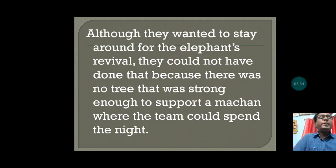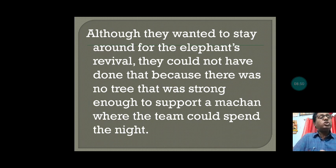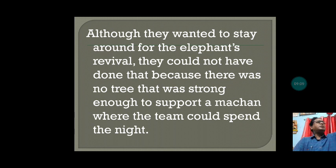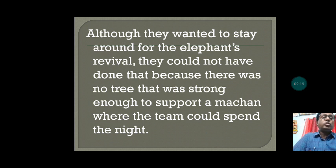Although they wanted to stay around for the elephant's revival — to stay there until the elephant regained consciousness — they could not, because there was no tree strong enough to support a machang where the team could spend the night. They wanted to stay there but there was no strong enough tree around that part from which they could make a machang. A machang is a raised platform surface, so that they could stay safe from the dangerous animals in the forest.